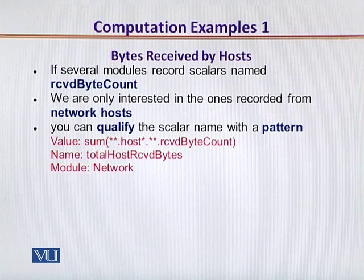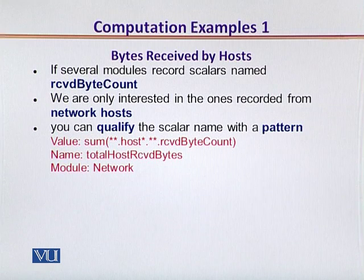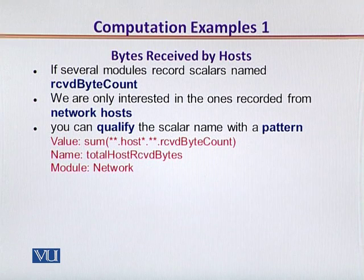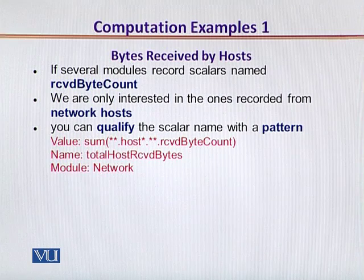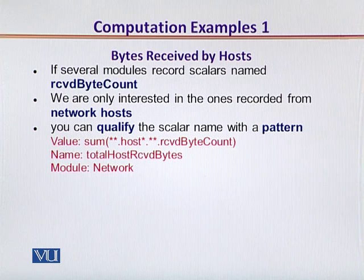We can also extract the bytes received by all the hosts — not the servers — or some of the hosts within a network. We can qualify the scalar name using any pattern. In this code snippet, we call the sum function but wildcard it with any host, given by '**'. The '**' indicates all the bytes which have been received by all the hosts, and we save the result at the network level.